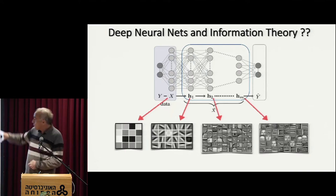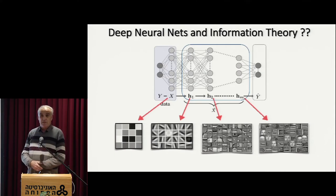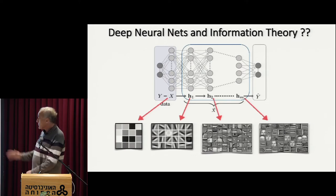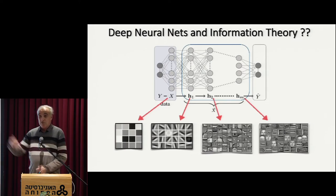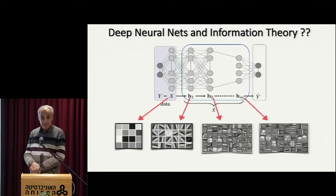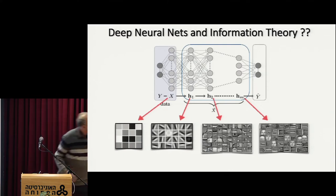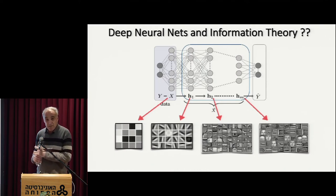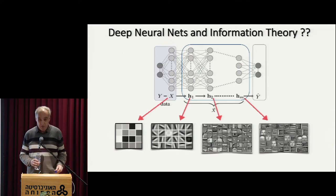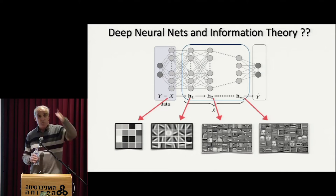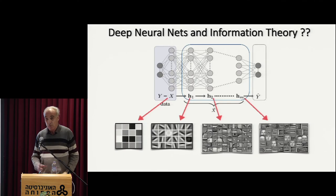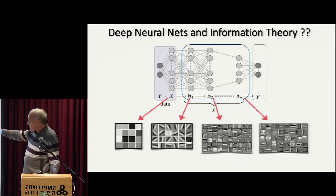Once we fix the weights, each of the layers forms a Markov chain. Eventually the last hidden layer HM is going to generate a simple prediction of Y, which I call Y-hat. Of course Y-hat is not exactly Y, because the network may not be perfect. What it gives me is the probability of the label Y given the pattern X — and even for a deterministic network, usually in the last layer we put some sigmoidal function and interpret it as a probability of the label.